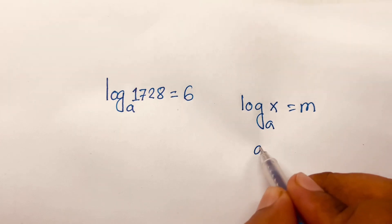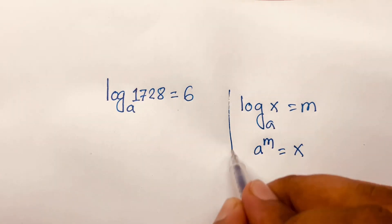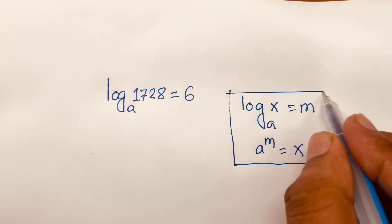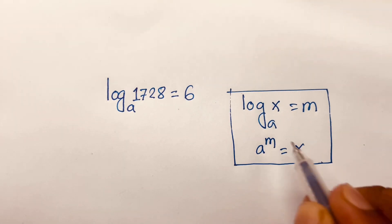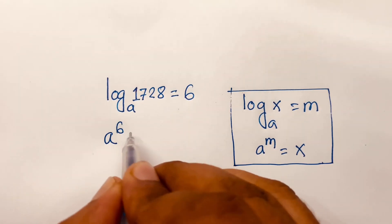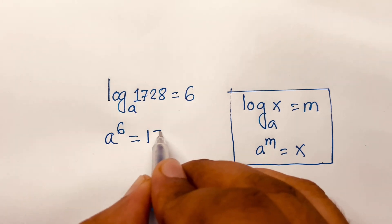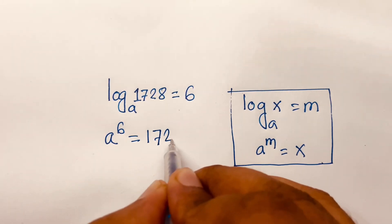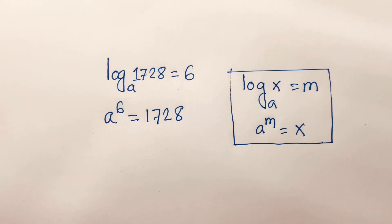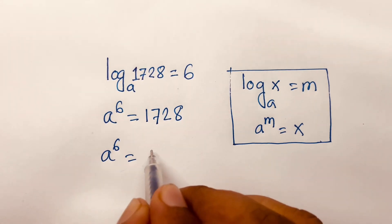According to this rule, we can say a to the power 6 is equal to 1728.